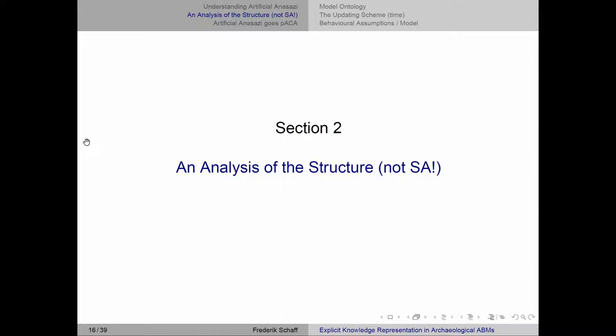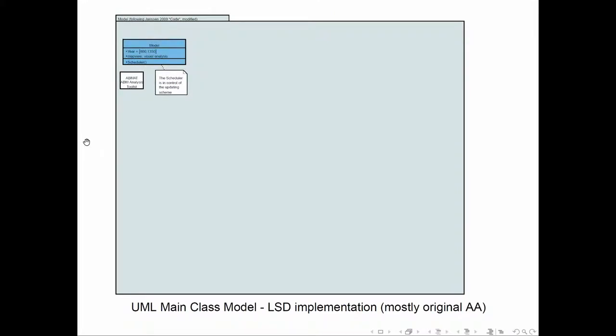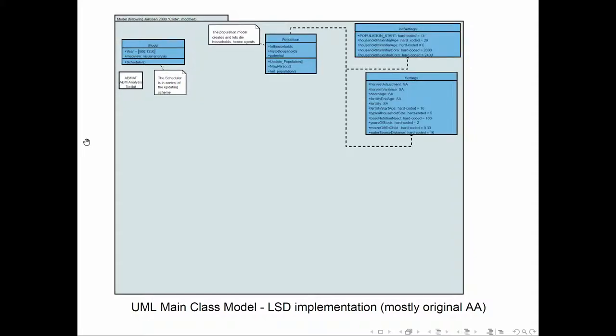This model is very much driven by the data, which is not ideal, and it was far more complicated than I expected to reimplement. I'll give a brief walkthrough of the model using a UML class diagram, which points to the main objects. We have a population model which uses various settings — mostly hard-coded — such as typical household size and how much maize a household needs to not die. We also have an environmental component with a geographical interface.